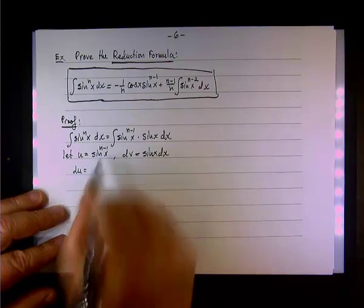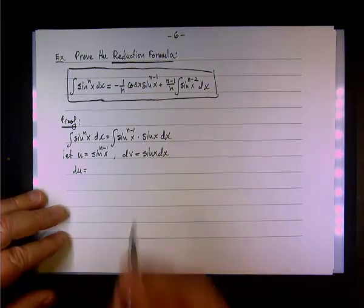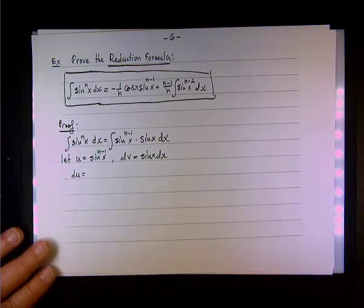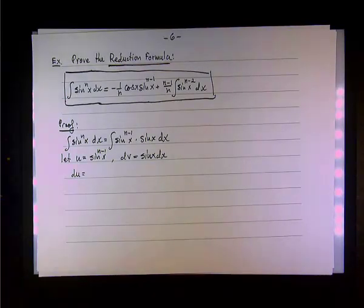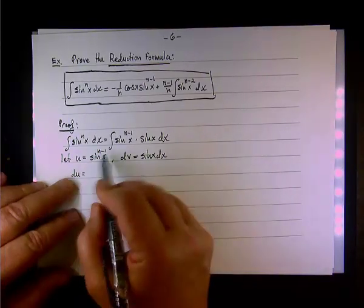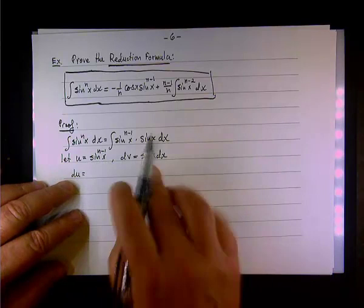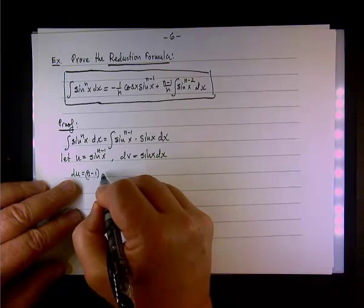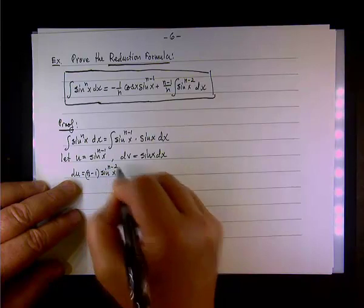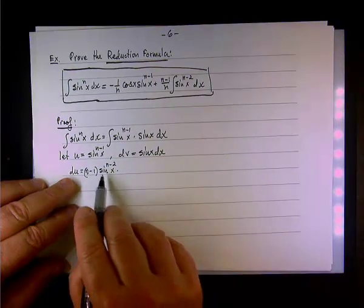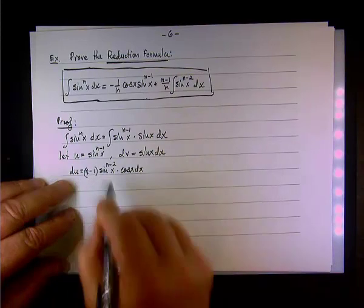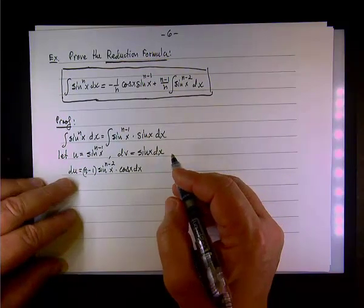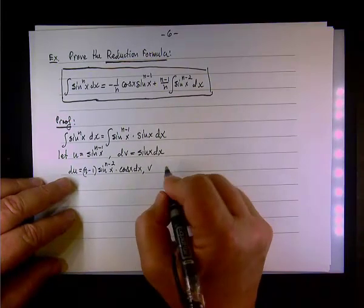So we let u equal sin x to the power of n minus 1, and therefore dv will be sin x dx. For du, I need to differentiate. The derivative is n minus 1 times sin x to the n minus 2, and then the derivative of sin x itself is cos x dx. So this is du — the derivative of sin x to the power of n minus 1. V is the antiderivative of sin x, which is negative cos x.